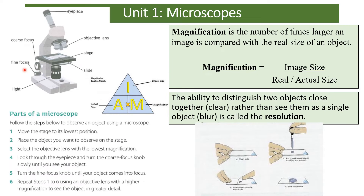To use the microscope: first move the stage to its lowest position. Place the slide onto the stage and put the clips on. Select the objective lens with the lowest magnification — it's really important you use the lowest magnification to get the first image. Look through the eyepiece lens and use the coarse focus knob until you see your object, then use the fine focus knob. If you want a higher magnification, increase it using the objective lens to make the image bigger.